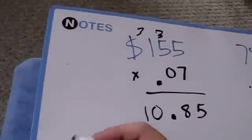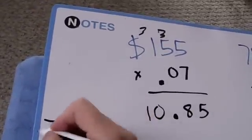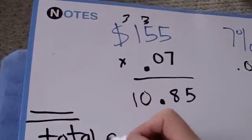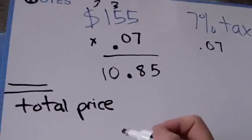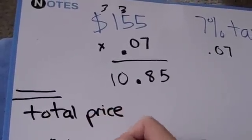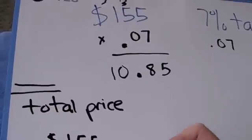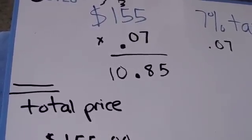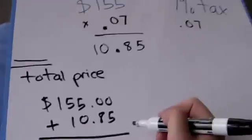Now that we have the tax of $10.85, the next step is to add this tax to the price of $155 to figure out how much the item was. $155 plus $10.85 is equal to $165.85.